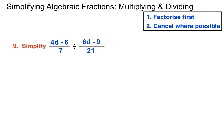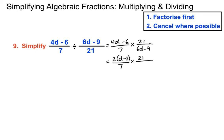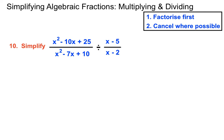Here we've got a combination of factorising and dividing by a fraction. (4d minus 6) over 7 stays normal; we turn it into a multiply and reciprocate to get 21 over (6d minus 9). Then we factorise: 2 comes out of the top making 2(d minus 3), and 3 comes out of the bottom making 3(2d minus 3). The brackets end up identical — d minus 3 cancels top and bottom; 7 goes into 21 three times; that 3 cancels with the top 3. We're left with 2 on top and 1 on the bottom, so the answer is 2.